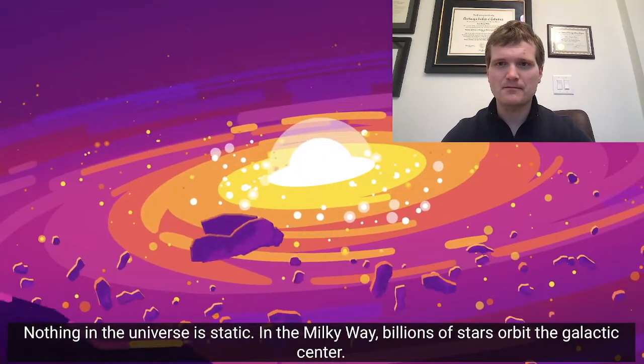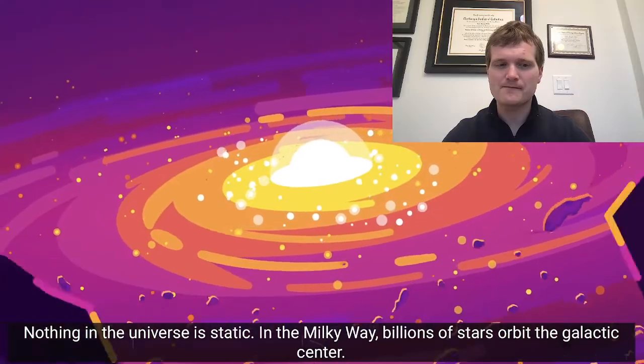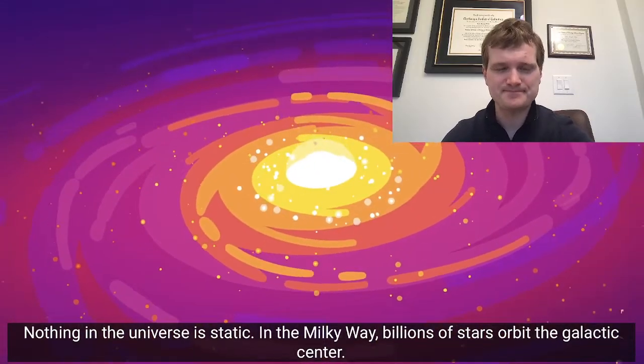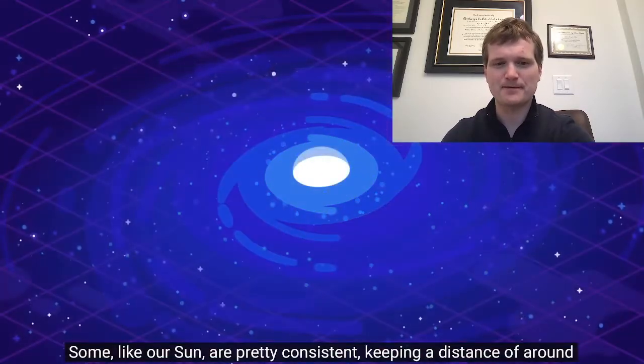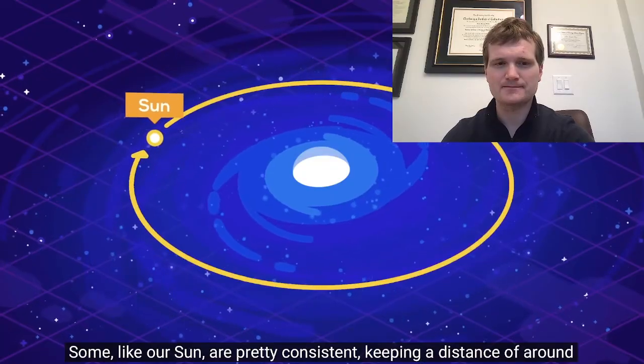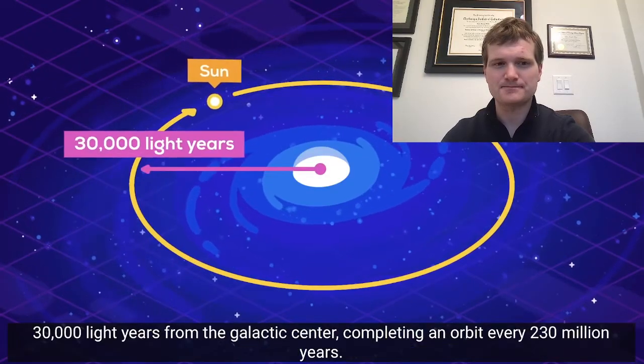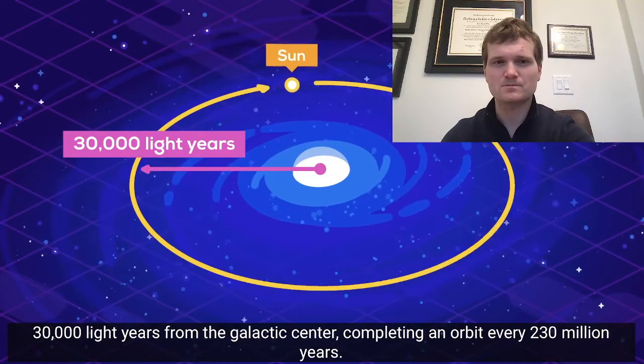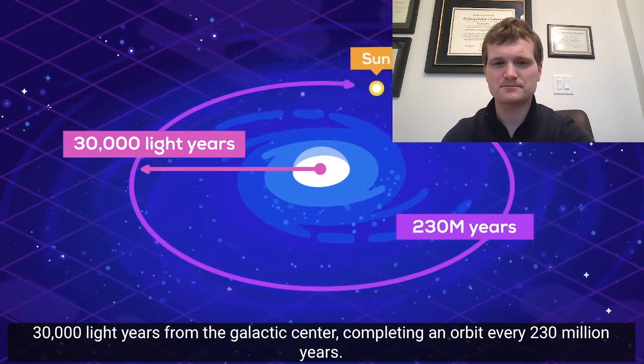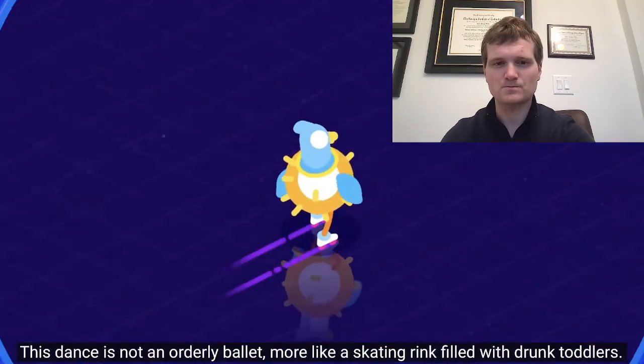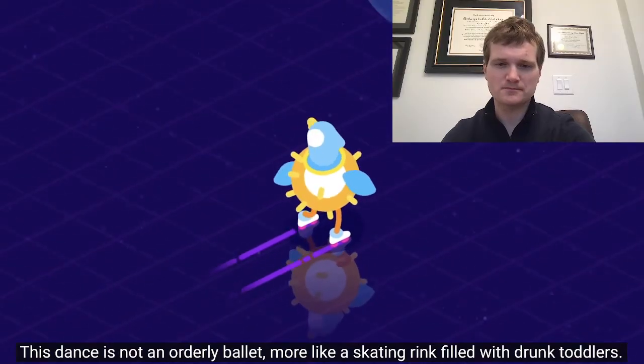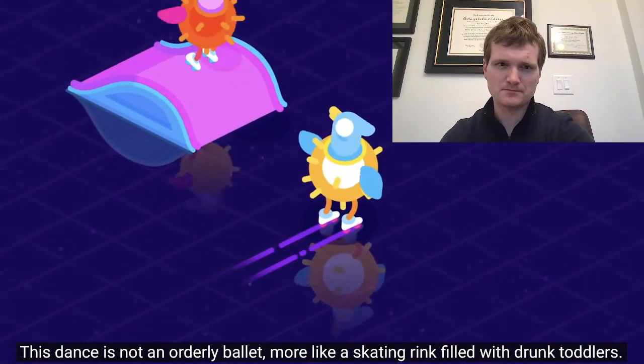Nothing in the universe is static. In the Milky Way, billions of stars orbit the galactic center. Some, like our sun, are pretty consistent, keeping a distance of around 30,000 light years from the galactic center, completing an orbit every 230 million years. This dance is not an orderly ballet, more like a skating rink filled with drunk toddlers.